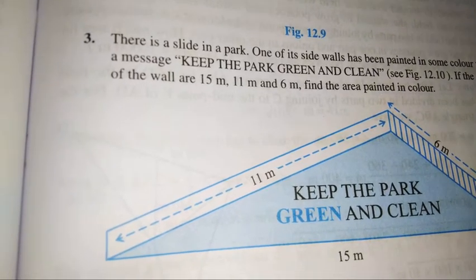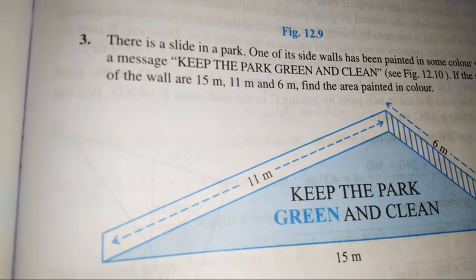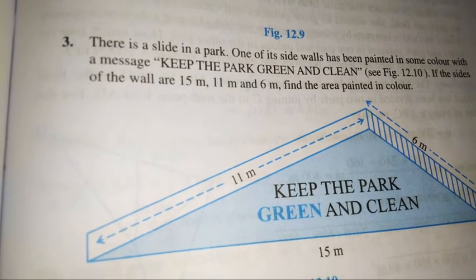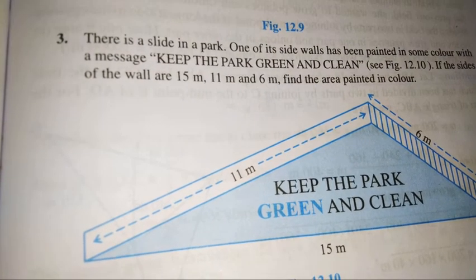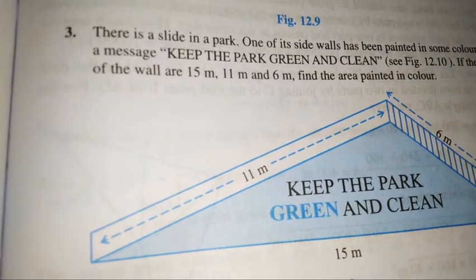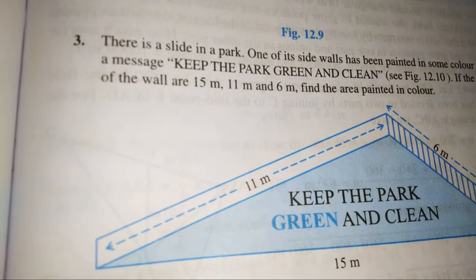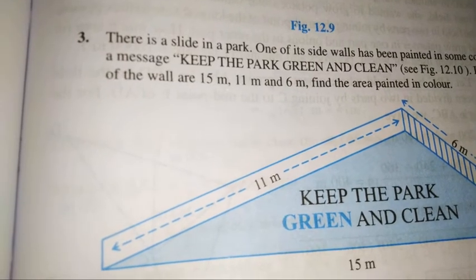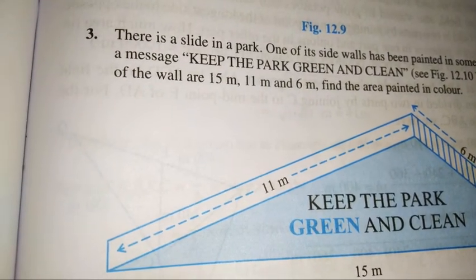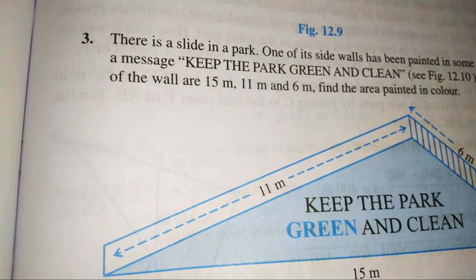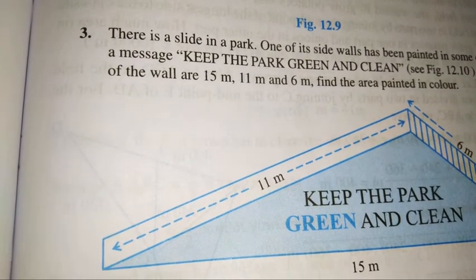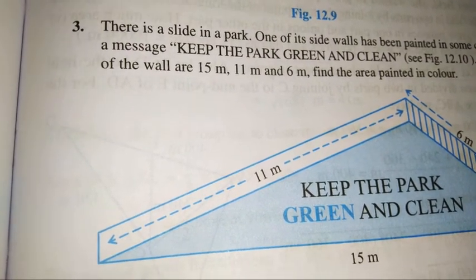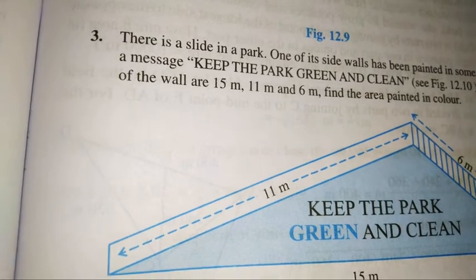Go to question number three. There is a slide in a park. One of its walls has been painted in some color with a message: keep the park green and clean. See the figure. If the sides of the wall are 15 meter, 11 meter and 6 meter, find the area painted in color.